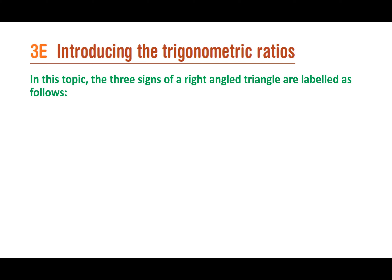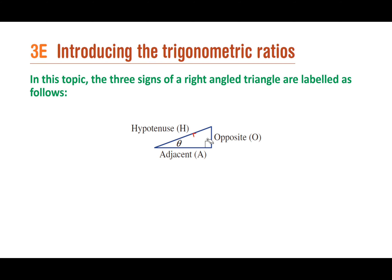We need to talk about the different sides of right angle triangles. Here's a right angle triangle with three different sides. The first side is called the hypotenuse — we should remember that the hypotenuse is the longest side, or in other words, it is the side that is opposite or across from the right angle. The other two parts of the triangle are next to the right angle, whereas the hypotenuse is not.